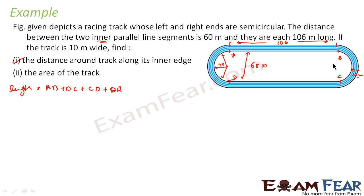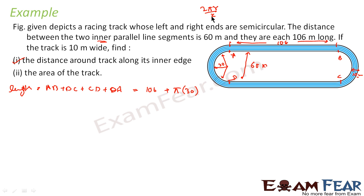BC is the semicircle arc on one end. The semi-perimeter of a circle of radius R is πR. So BC is π × 30. AB is 106, CD is 106, and DA is also π × 30.